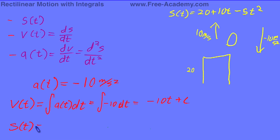Now your position with respect to time is going to equal your integral of your velocity with respect to time, which in our situation is going to equal the integral of negative 10t plus c dt, which equals negative 5t squared plus ct plus d.